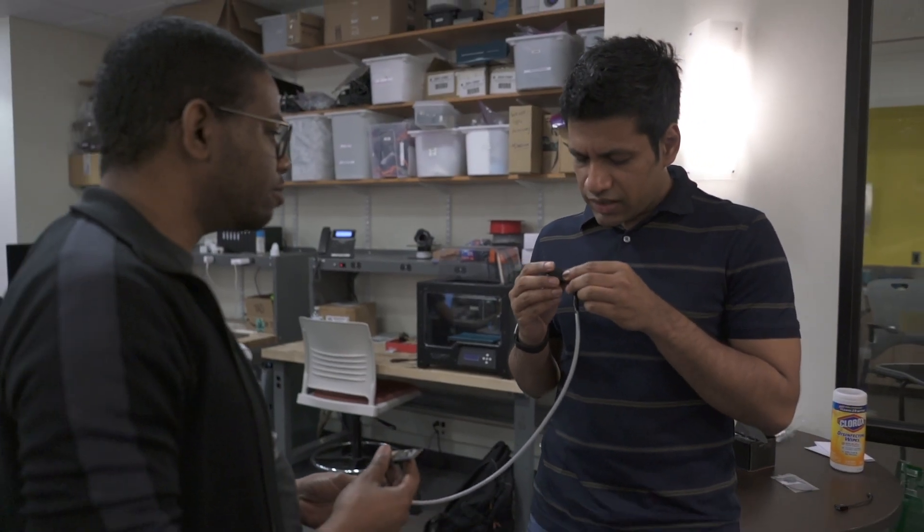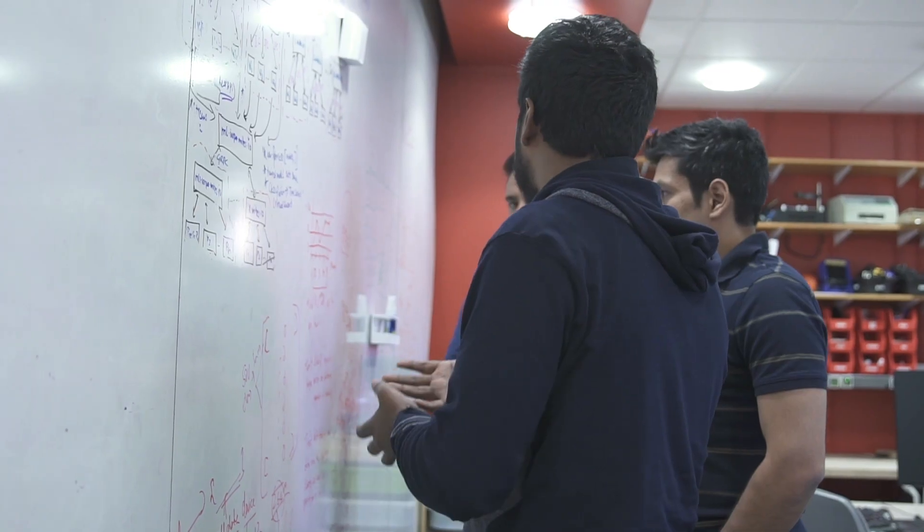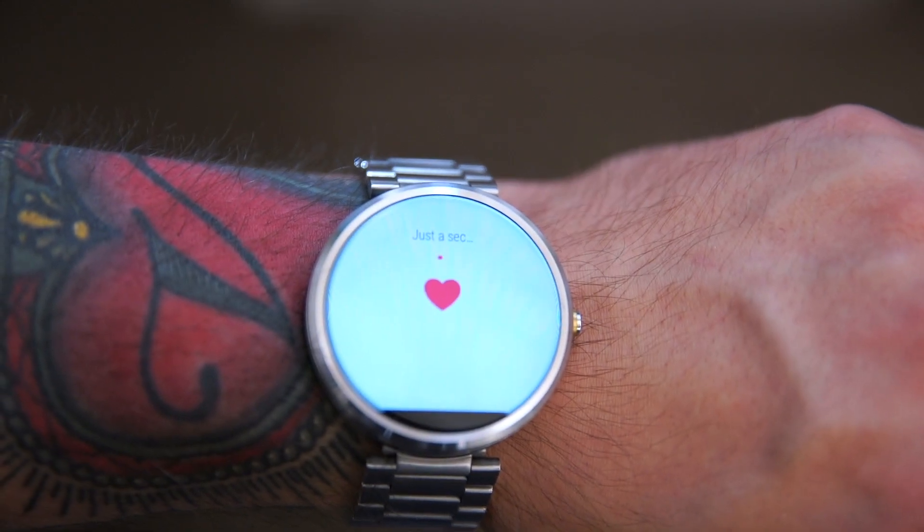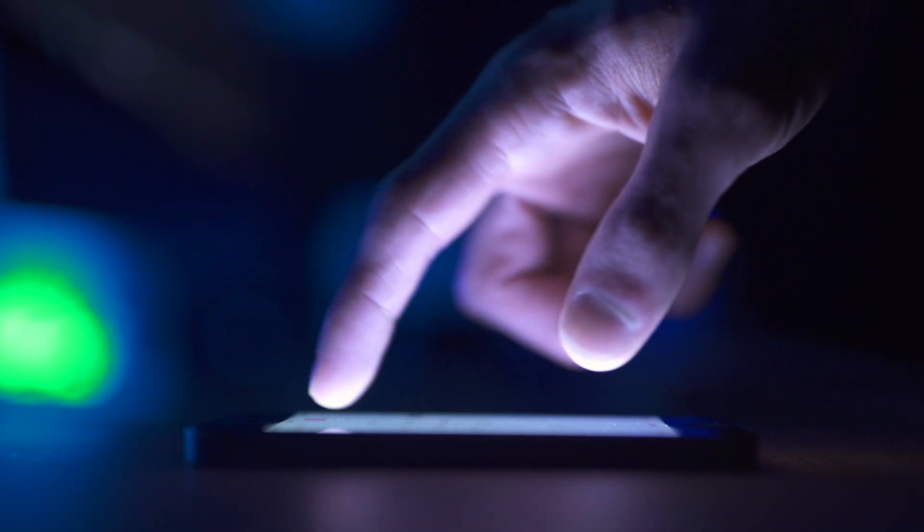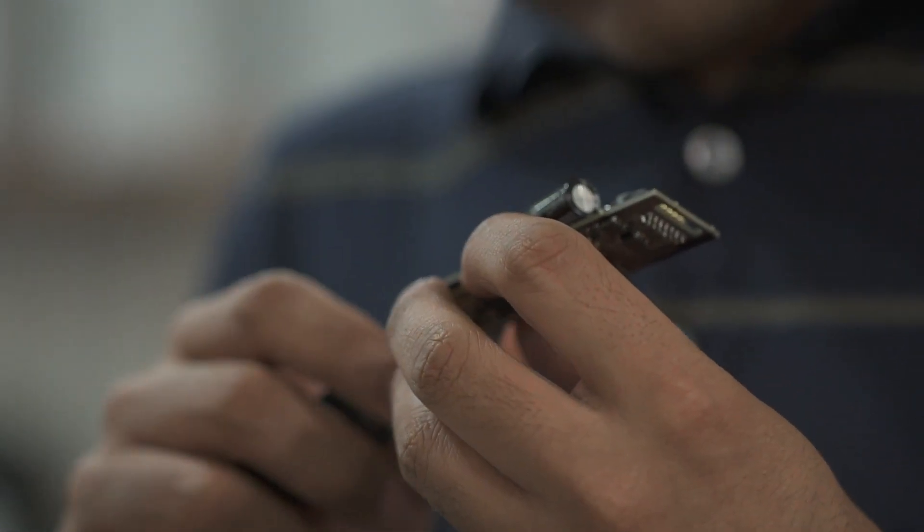No one is going to distribute a billion stethoscopes in the world, but companies like Apple, Samsung, and Google are going to make billions of smartphones and smartwatches and sell them all around the world. If we convert these devices into heart rate monitors, we suddenly have more than a billion stethoscopes.